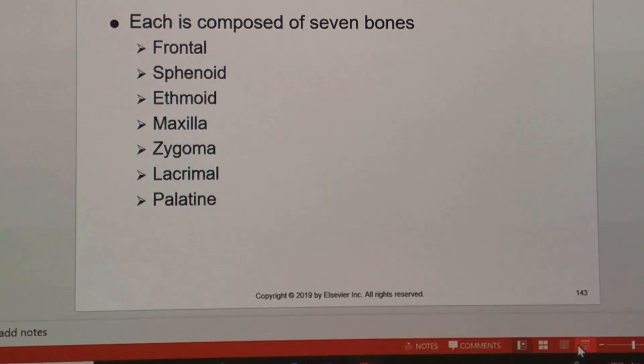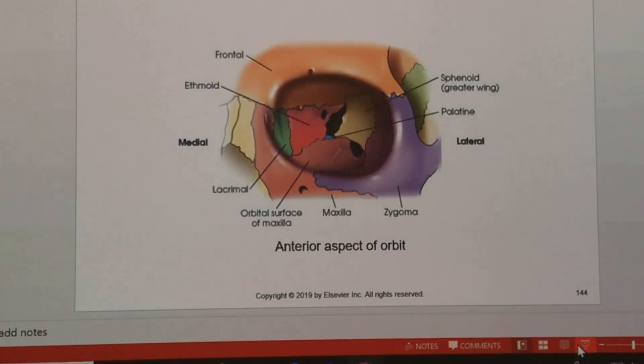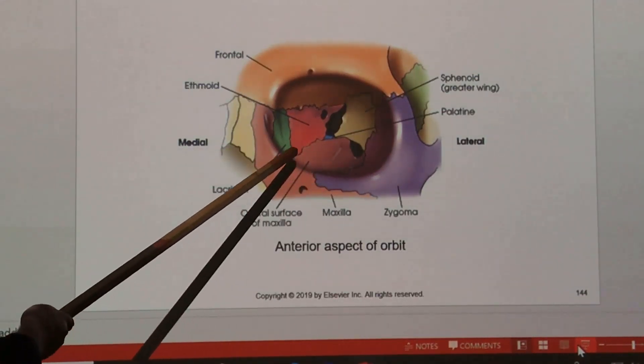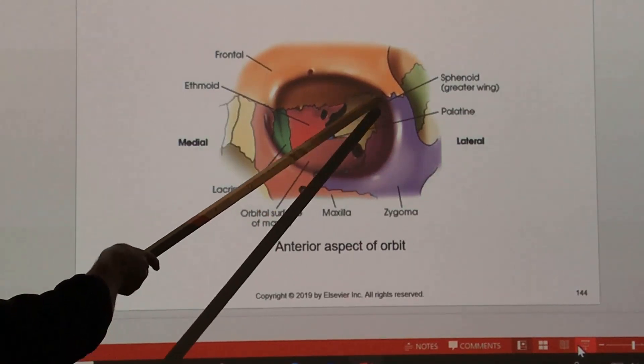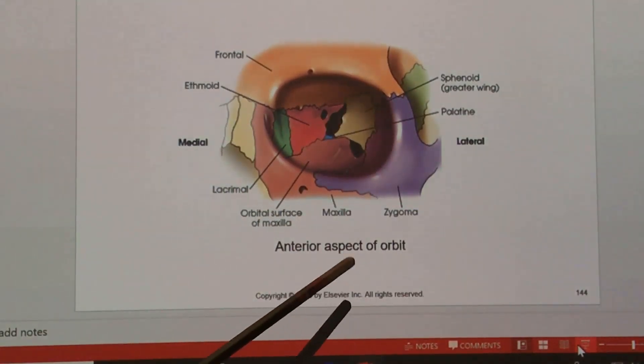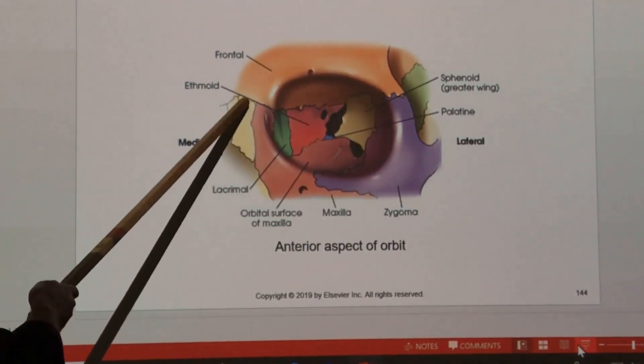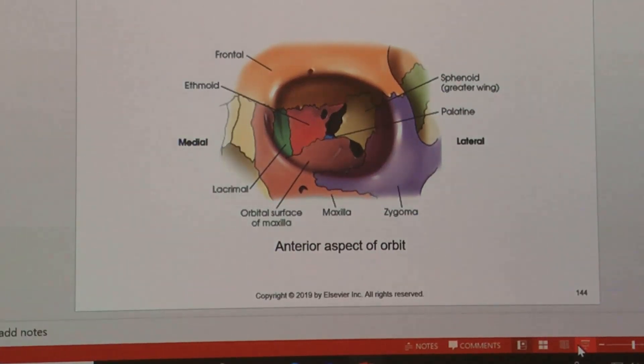Looking at the diagram of the orbit and looking at the sutures that join the bones together, you can really see it's a very complicated structure with a lot of different bones that go into it. We've got the floor of the orbit here, lateral wall of the orbit over there, that's the zygoma, medial wall, these are actually the nasal bones over here.